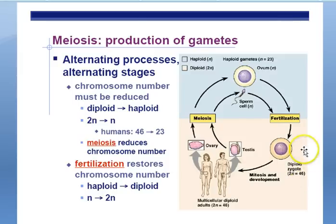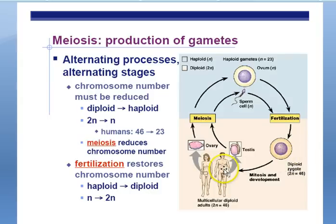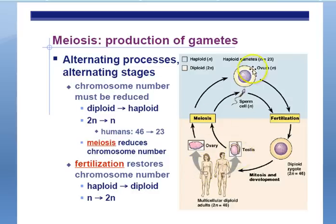Once you have a fertilized egg — a zygote — this zygote will undergo mitosis, making exact copies or clones, so all the cells in your body produced by that one zygote have the same number of chromosomes: 46. Then the cycle repeats again. Females make eggs with half the number of chromosomes, males make sperm with half the number of chromosomes, they fuse together, and we're back at a diploid zygote.